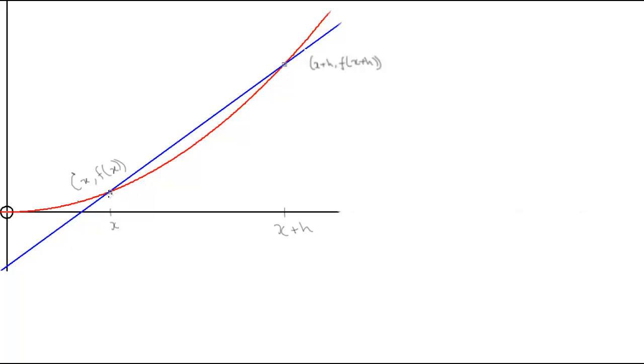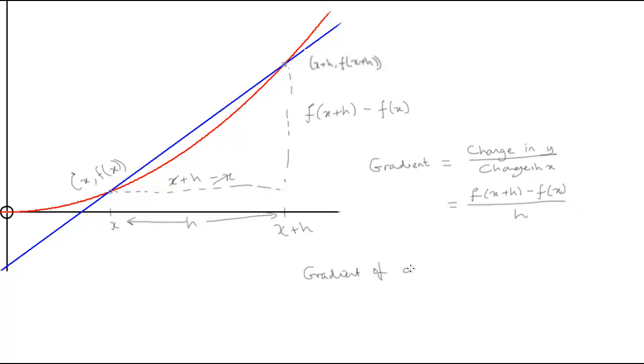The gradient of that straight line will just be the change in y divided by the change in x, which is f of x plus h minus f of x, divided by x plus h minus x, which simplifies down just to h, it's just the distance between x and x plus h is h. So the gradient of the curve at the general point x is the limit as we move that second point as close as we can to the first point. So we'll say that's the limit as h tends to 0 of f of x plus h minus f of x divided by h.